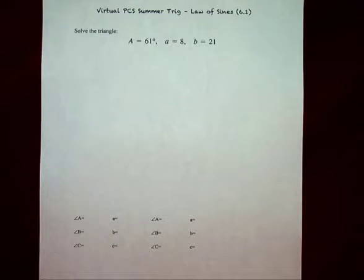Now, let's solve this triangle. A is 61 degrees, side A is 8, and B is 21. Well, here's the thing. That is side-side angle. So let's go ahead and set it up.